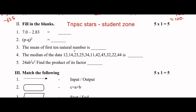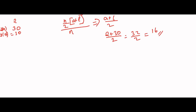Fill in the blanks: 7.0 minus 2.83. Write 7.00 to match two decimal places. Subtracting 2.83 from 7.00: borrow as needed — 10 minus 3 is 7, 9 minus 8 is 1, 6 minus 2 is 4. So the answer is 4.17.